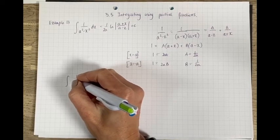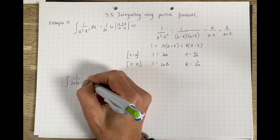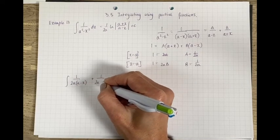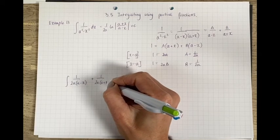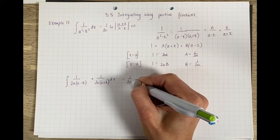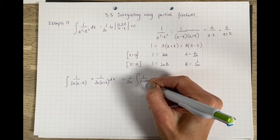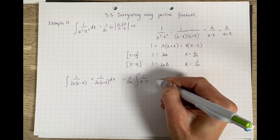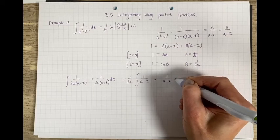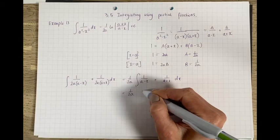The integral of 1 over 2a times (a minus x) plus 1 over 2a times (a plus x) dx. We can take the 1 over 2a out, and then we've got to integrate 1 over (a minus x) plus 1 over (a plus x) dx.